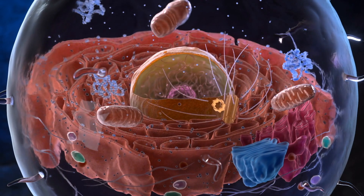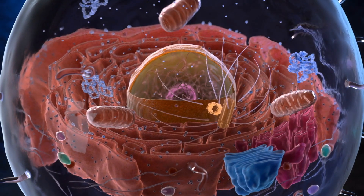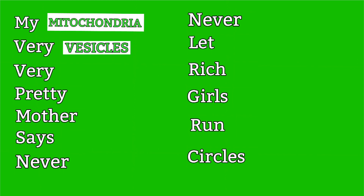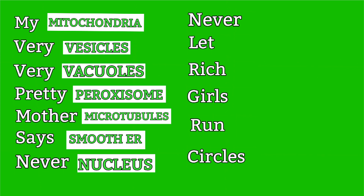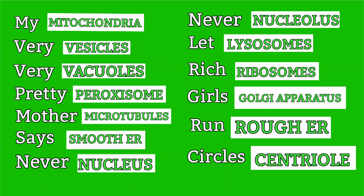Here's the mnemonic to help memorize these organelles: My very very pretty mother says never never let rich girls run circles. That's the mnemonic.